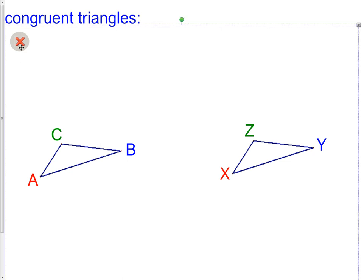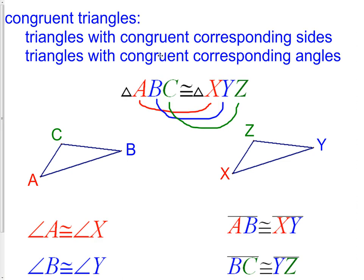What it means is triangles with congruent corresponding sides and triangles with congruent corresponding angles.